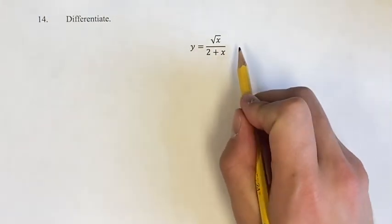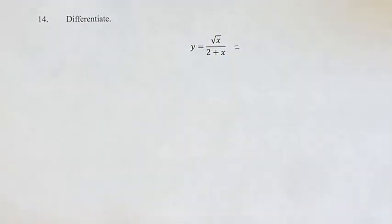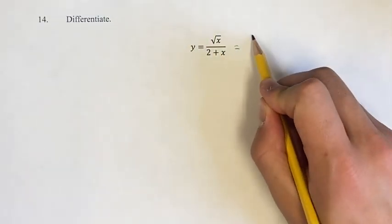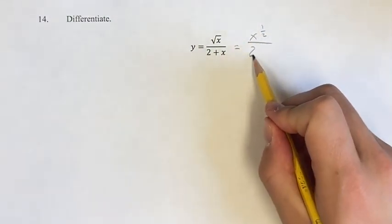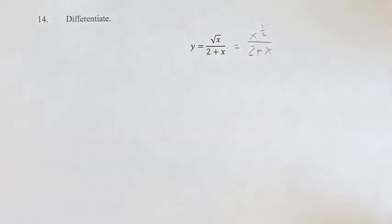Now, the first thing we're going to want to do is convert the square root of x into a power function. So the square root is equal to x to the 1 half, and then over 2 plus x is the same. I'm just doing this because it's a little bit easier to see how we can find the derivative.